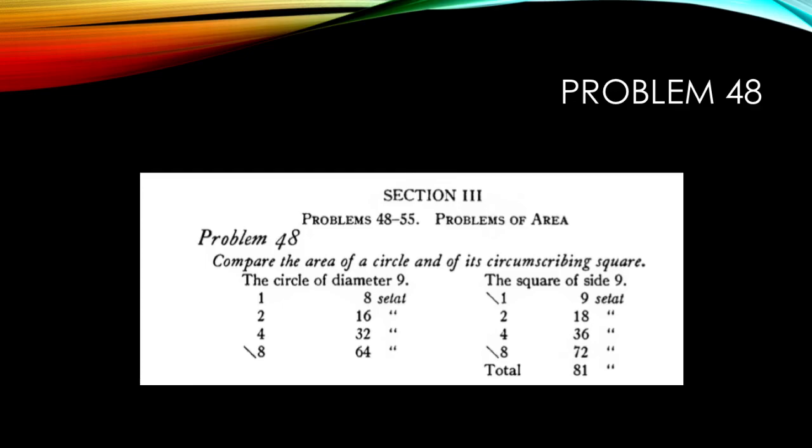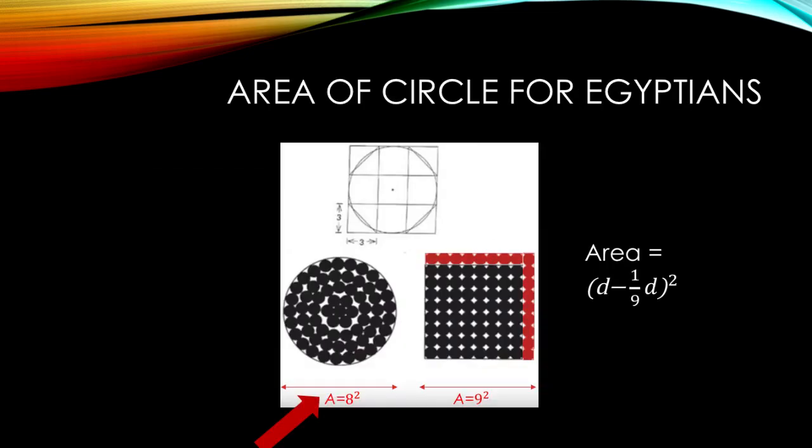1 times 8 is 8 setat, times 2 is 16 setat, times 2 gives you 32, times 2 gives you 64. So the area of the circle with the diameter 9 is 8 times 8, 64.